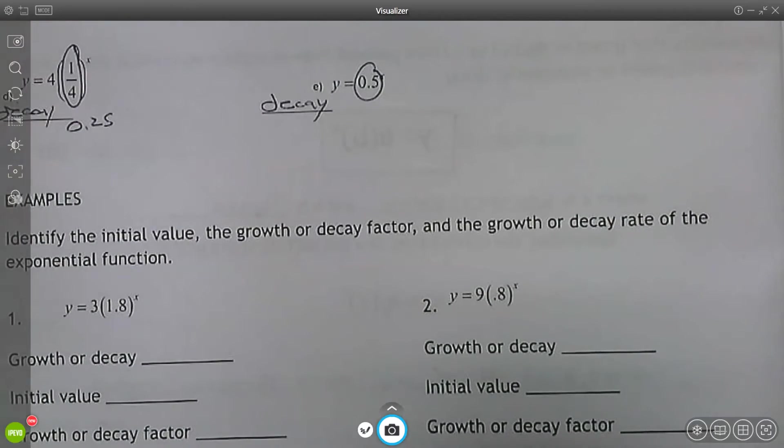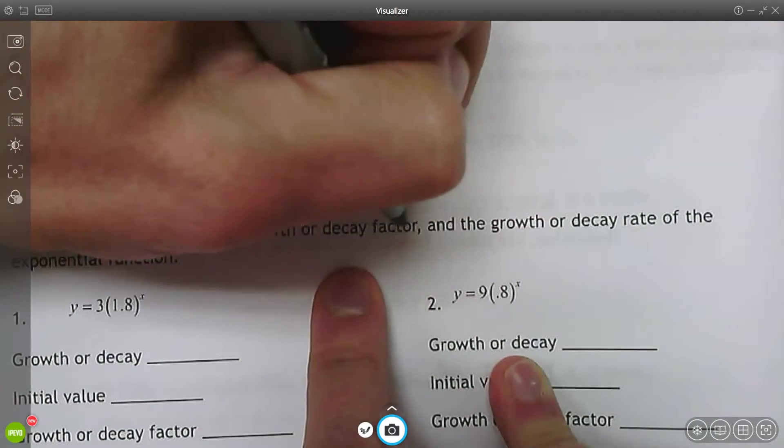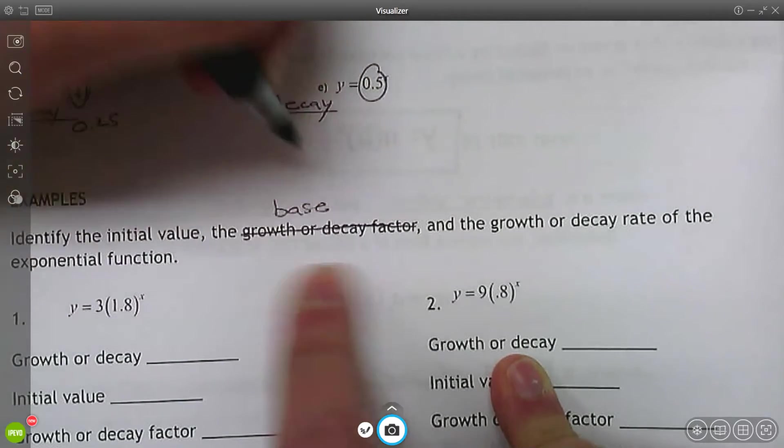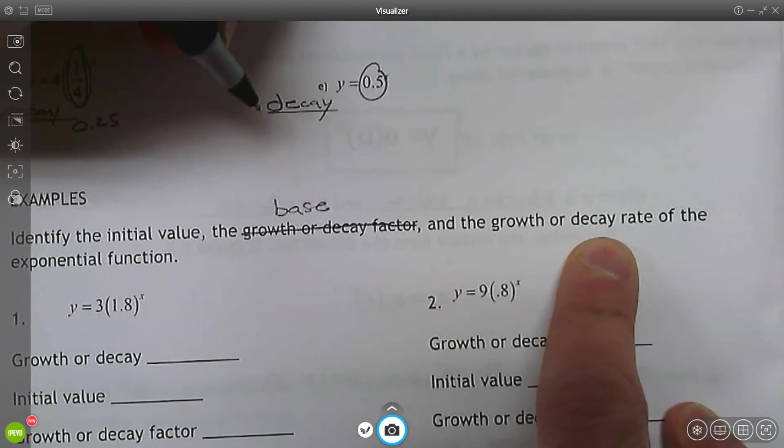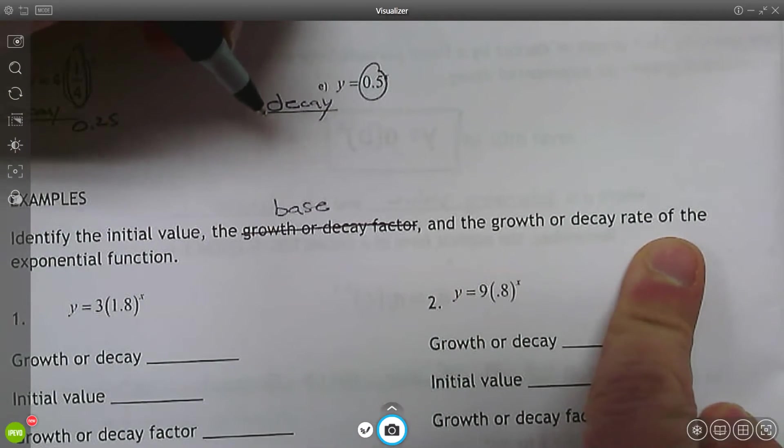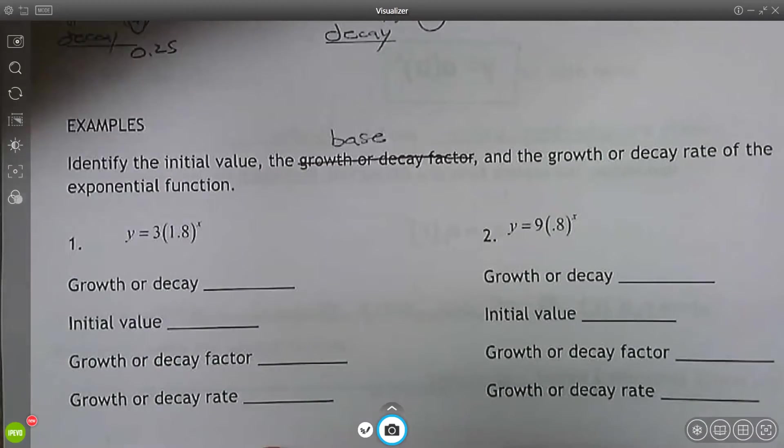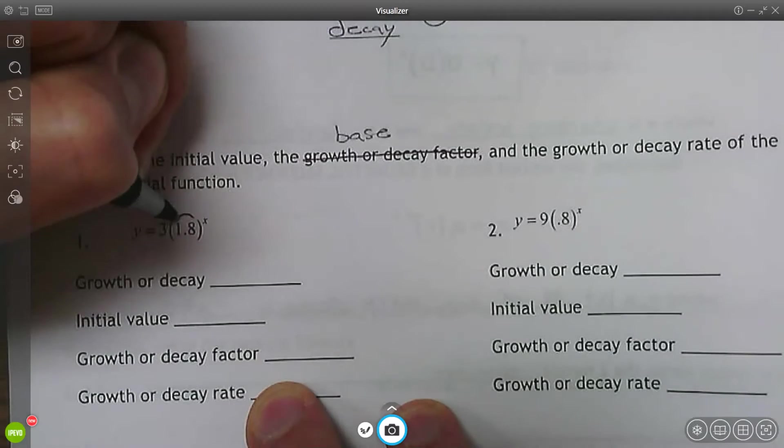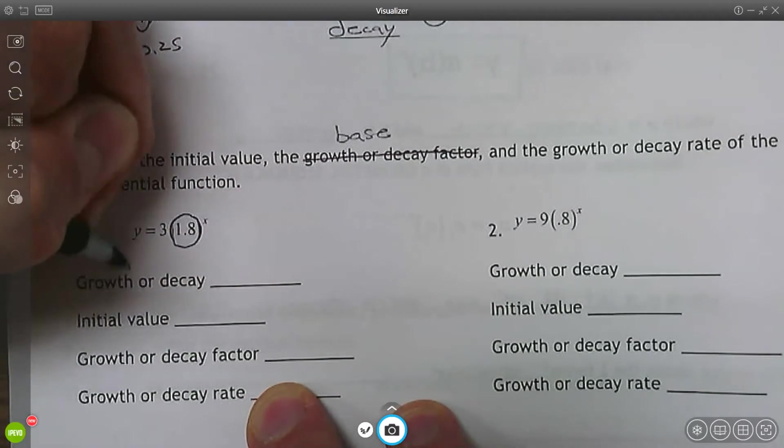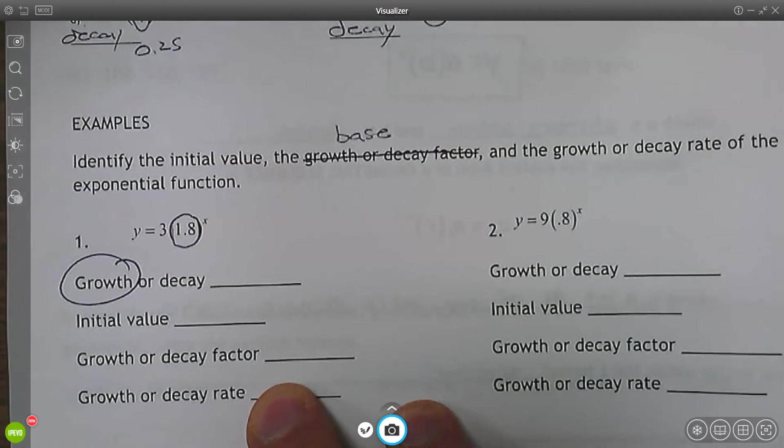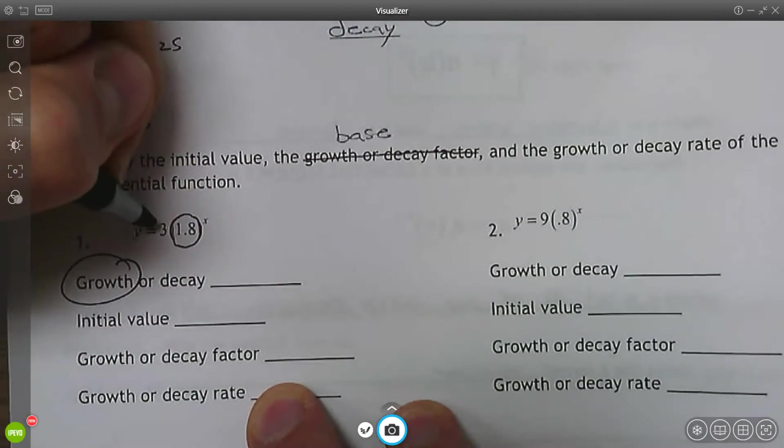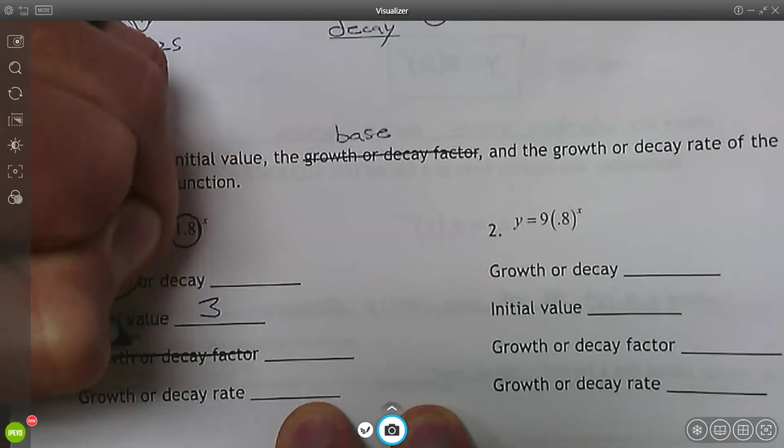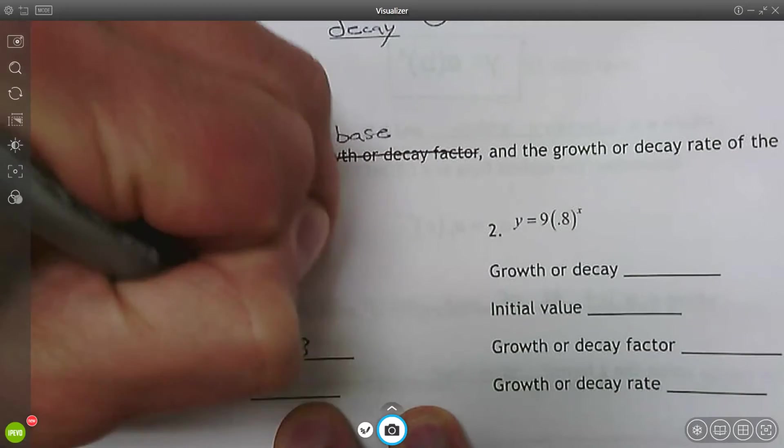The next section asks you to identify the initial value, the growth or decay factor. I'm going to refer to this as the base and then the growth or decay rate. All right. So for this first question, growth or decay, you're going to look at the base like we just did above, 1.8. This is exponential growth. The initial value or the starting value is 3. The base is 1.8.